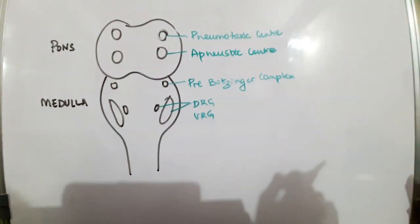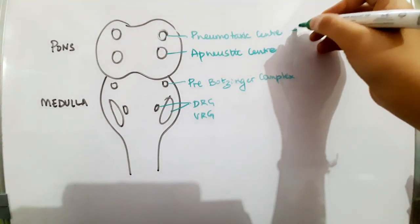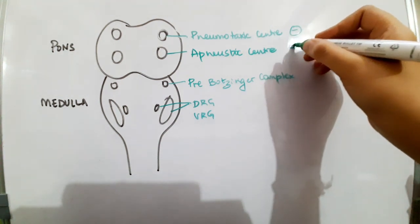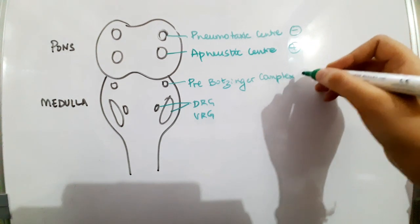The main action of the pneumotoxic center in the pons is to inhibit respiration, and the apneustic center, which is also in the pons, stimulates respiration.